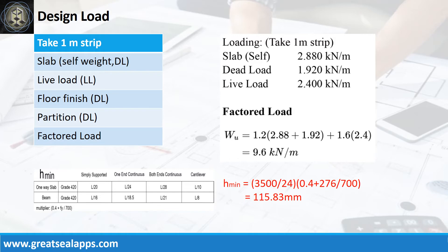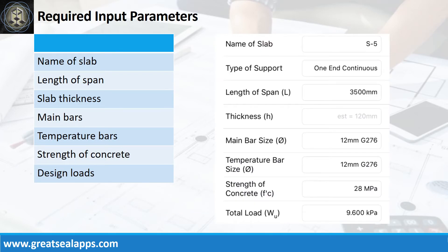Enumerate input parameters required. Name of slab, S5. Type of support, one end-continuous. Length of span, 3,500 mm. Slab thickness, 120 mm. Main bars and temperature bars, 12 mm bar at grade 276. Strength of concrete, 28 MPa. And factored load, 9.6 kPa.